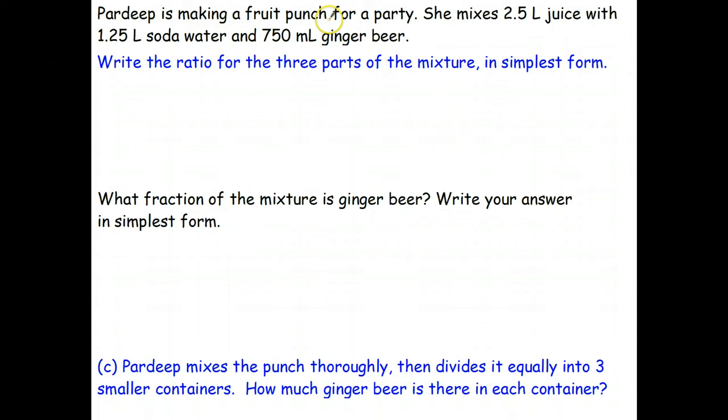Pardeep is making a fruit punch for a party. She mixes 2.5 liters of juice with 1.25 liters of soda water and 750 ml of ginger beer. So write the ratio for the three parts of the mixture in simplest form. Obviously what we're going to have to do here is convert everything into the smallest unit which is going to be milliliters.